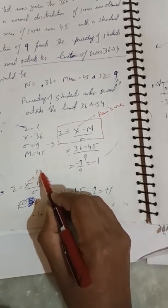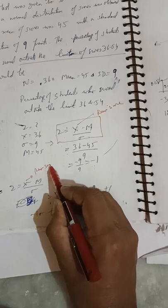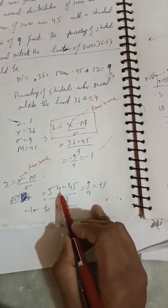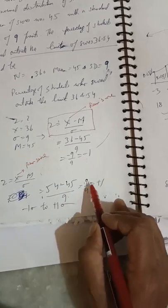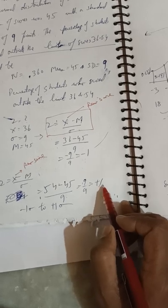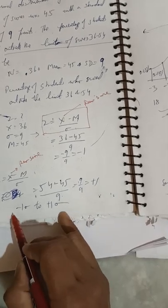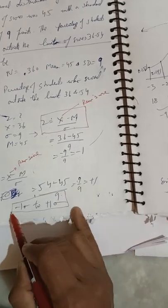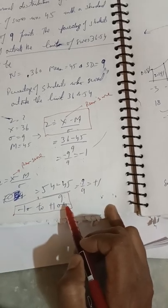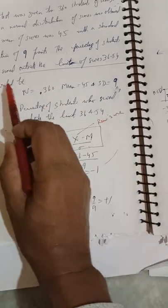Now z = (x - m) / sigma. The raw score given is 54, so z = (54 - 45) / 9 = 9/9 = +1 sigma. So the value we have is from -1 sigma to +1 sigma. The question asks for the percentage of students who scored outside the limits of scores 36 to 54.